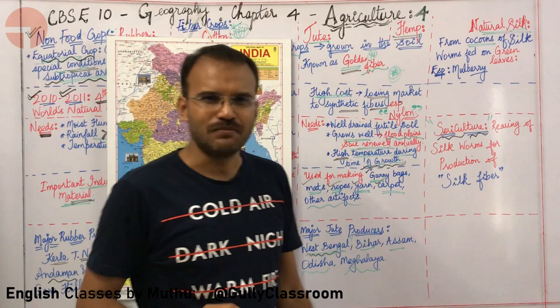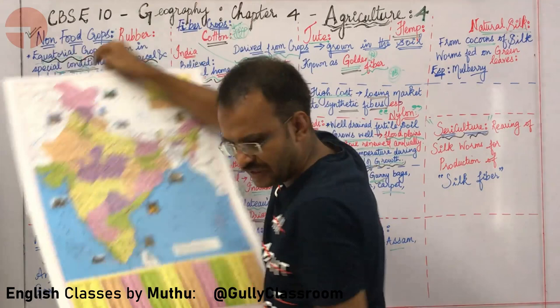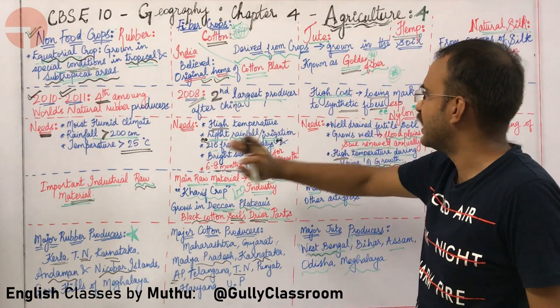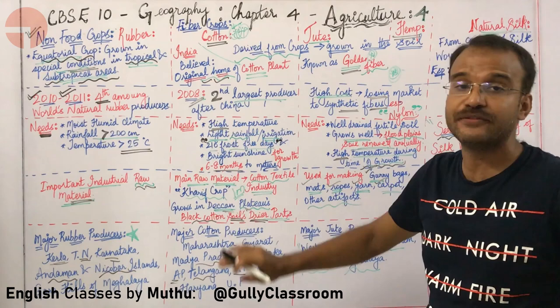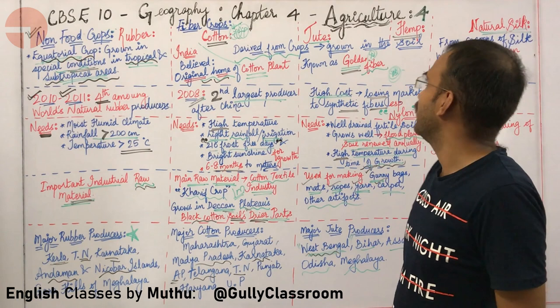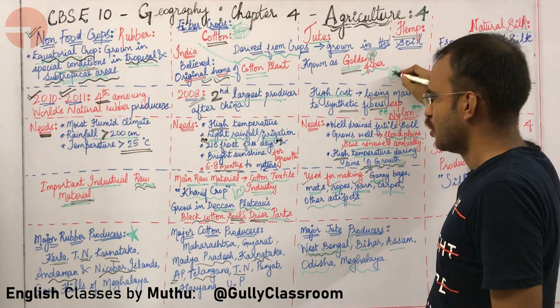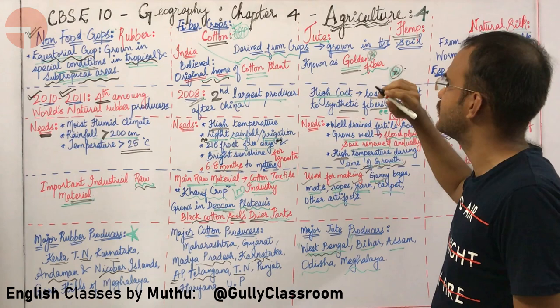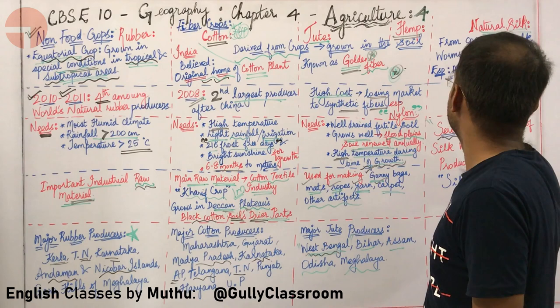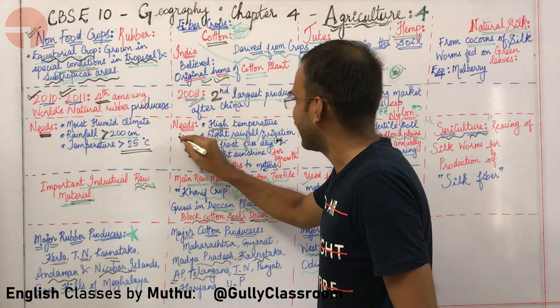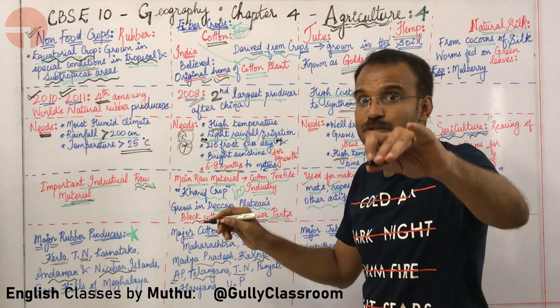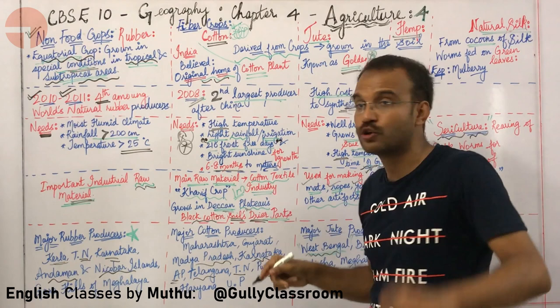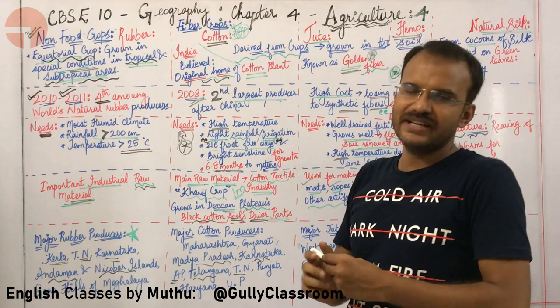That more or less completes our lecture. The most important topics to concentrate on are cotton's growing needs — especially the 210 frost-free days and bright sunshine for growth — and that cotton is a kharif crop (mnemonic: CK). Also remember that jute is called the Golden Fiber.